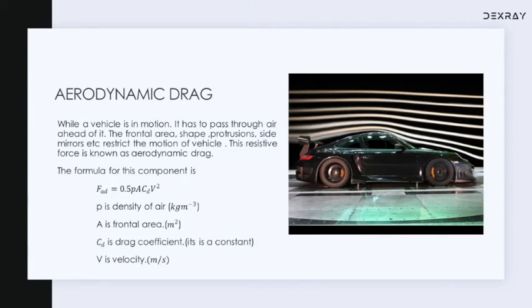The velocity of the vehicle and the frontal area are the two important factors influencing aerodynamic drag. The equation for aerodynamic drag is FAD = ½ × ρ × A × CD × V², where CD is the coefficient of drag, V is the velocity of the vehicle, and ρ is the density of air. Aerodynamic drag has a linear relationship with frontal area and air density, and is proportional to the square of velocity. So at higher speeds, the aerodynamic drag will be very high, and vehicles like sports cars must have designs optimized to minimize aerodynamic drag.